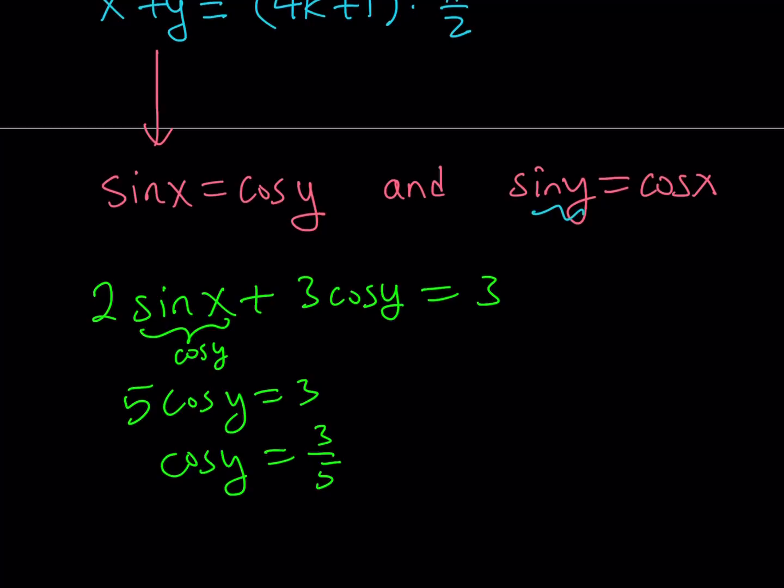Now, if you do something similar for the other one, for example, replace sine y with cosine x, and what was our original equation? Of course, we have to go to that first. That was 3 sine y plus 2 cosine x equals 4.